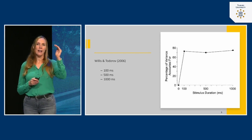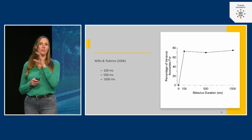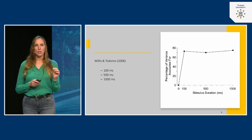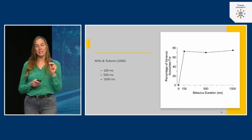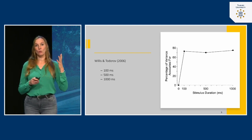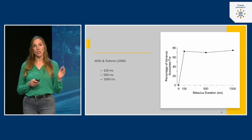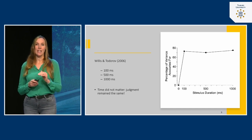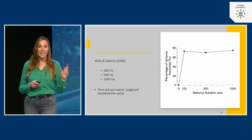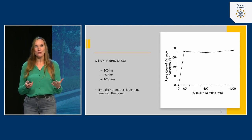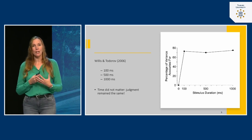Looking at the results, the graph shows that the height of the bar for 100, 500, or 1000 milliseconds is basically the same. This means people come up with a judgment about a person very quickly, and it doesn't depend on how long they can look at the picture. They replicated this experiment with unlimited viewing time, and the judgment still remained the same. So within one tenth of a second, we already form an impression about a person's personality.